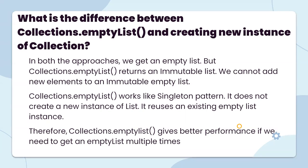What is the difference between Collections.emptyList() and creating a new ArrayList? In both approaches, we get an empty list, but Collections.emptyList() returns an immutable list — we cannot add a new element to an immutable empty list. Collections.emptyList() works like a singleton pattern: only one object is created. It does not create a new instance of a list; it reuses an existing empty list instance.